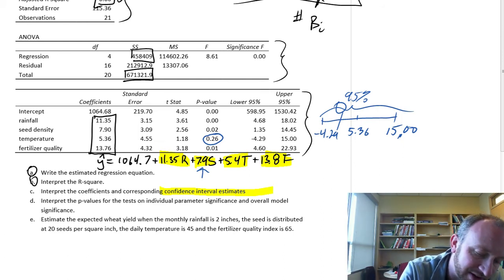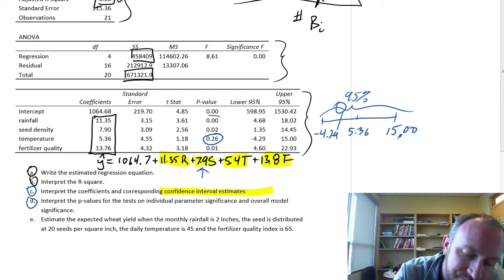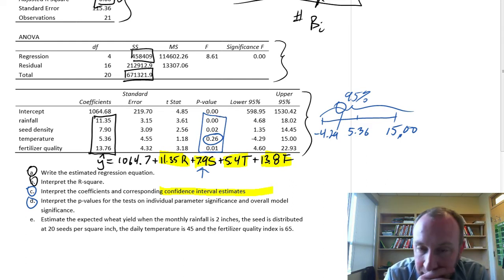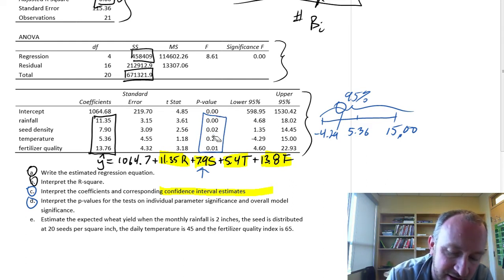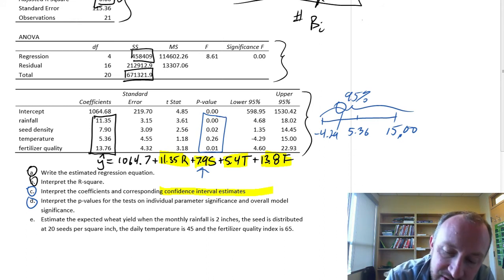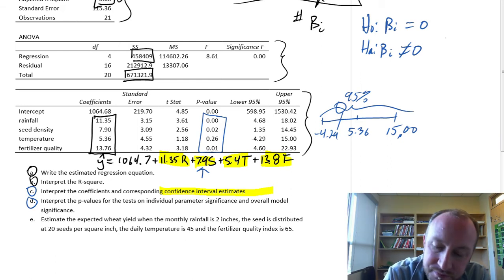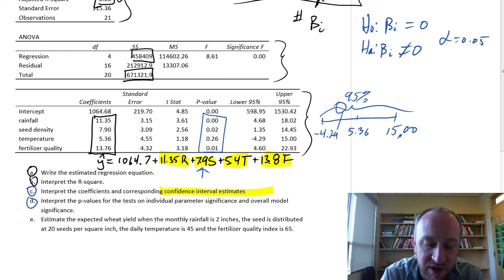And that's our perfect segue into part D. So now we're done C. When we look at all of our p-values, I'm just going to look at our slopes. Everything here comes up statistically significant except temperature. For each of these tests on individual parameter significance, these are testing each of those parameters. Are they statistically different from zero or not?